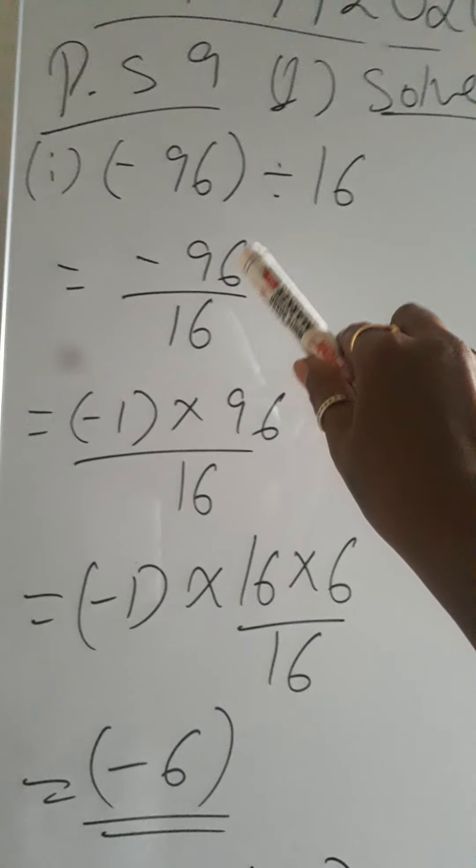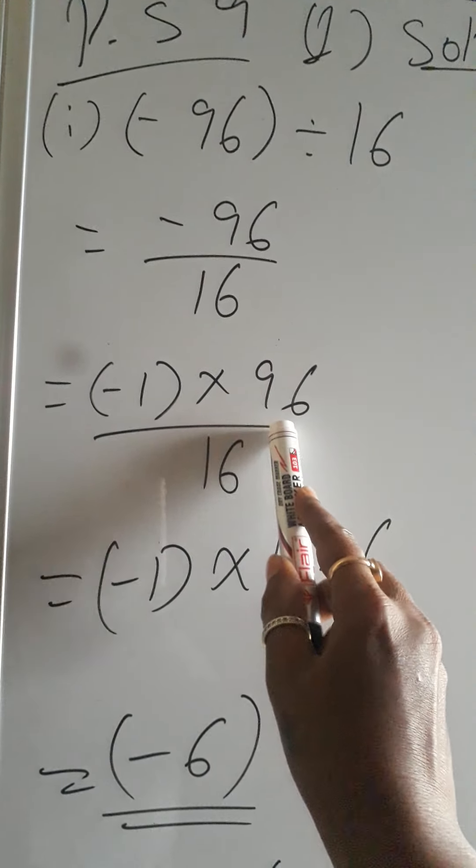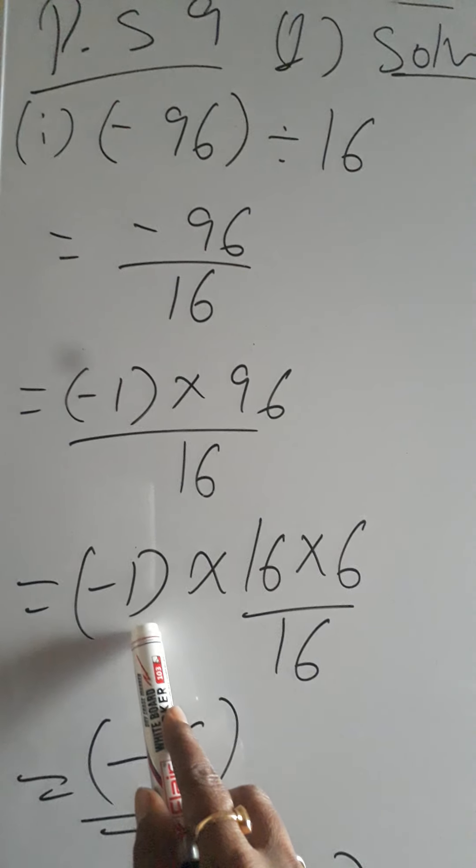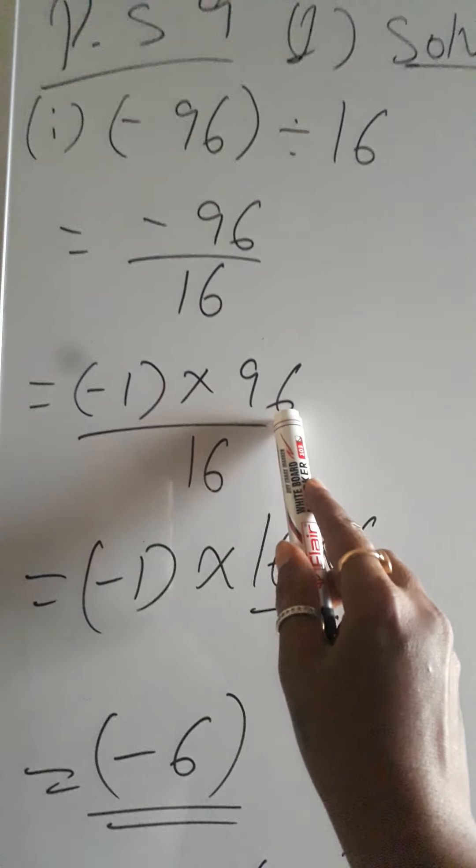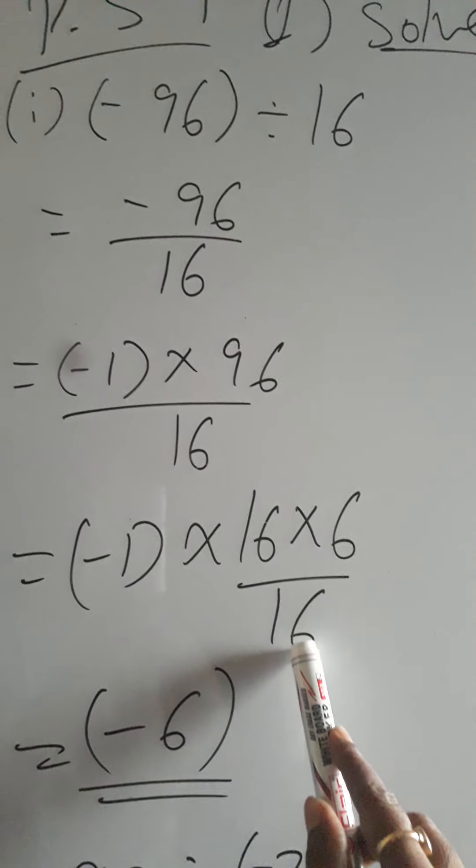So minus 96 divided by 16, we can write it as minus 1 into 96 upon 16, which in turn is minus 1 into, what gives me 96? 16 into 6 gives me 96 upon 16.